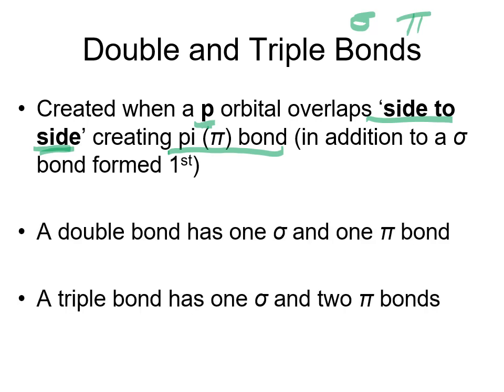A double bond is made up of one sigma bond and one pi bond. A triple bond is made up of one sigma bond and two pi bonds.